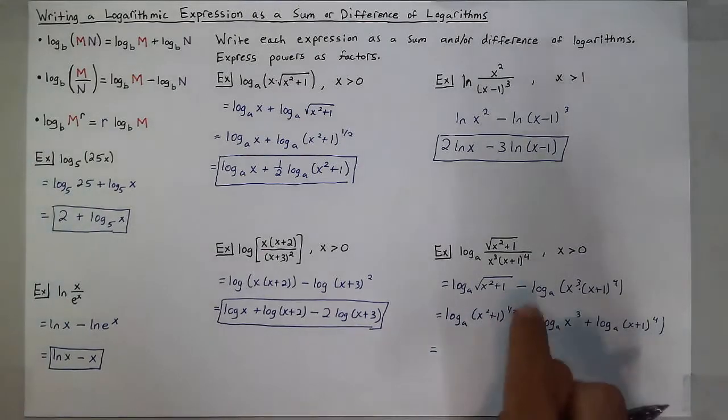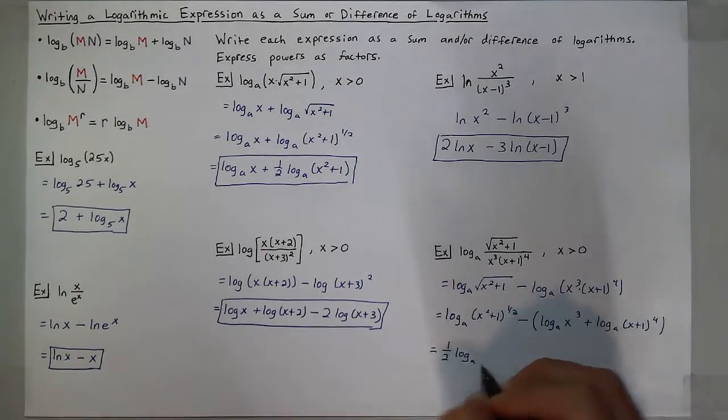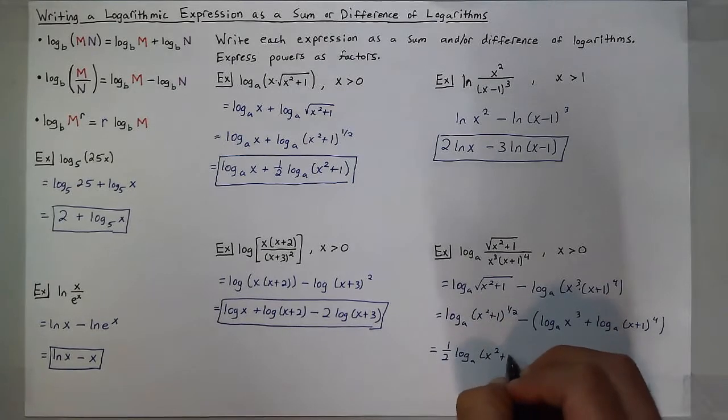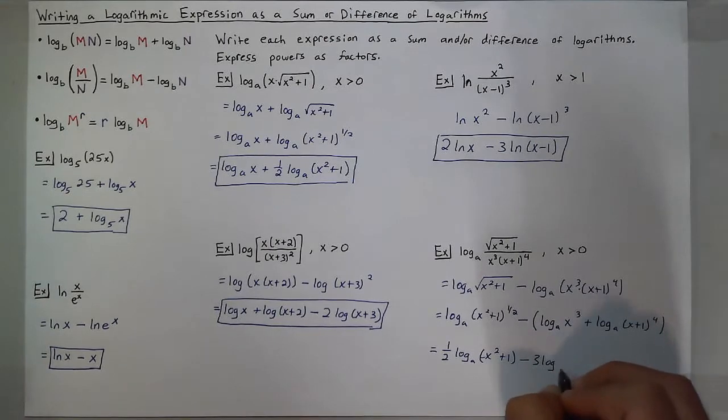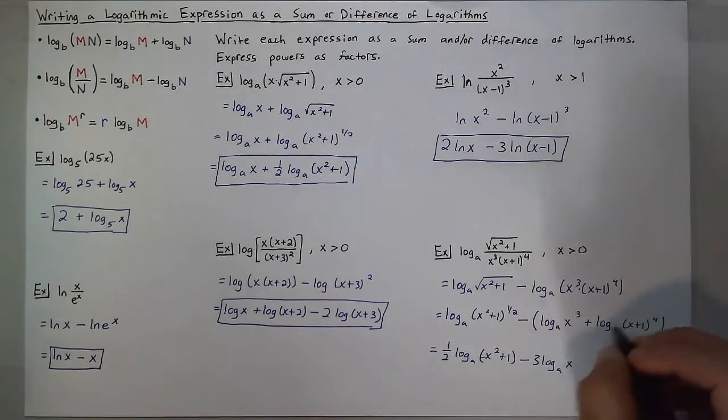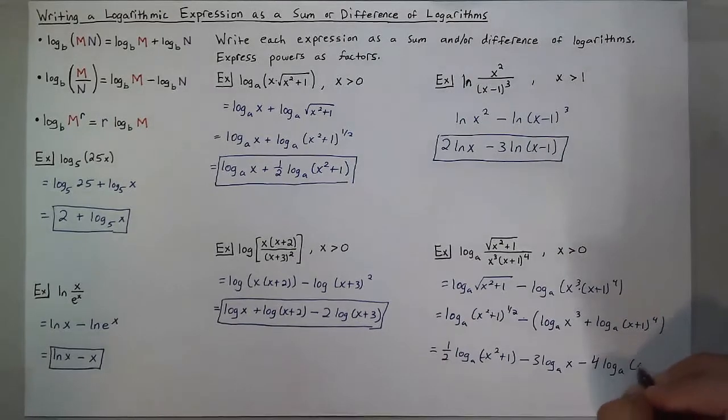So now, taking care of the powers, I'll have 1 half of log base a of x squared plus 1, then minus 3 log base a of x minus 4, again, that negative multiplies in and the 4 comes out in front, log base a of x plus 1.